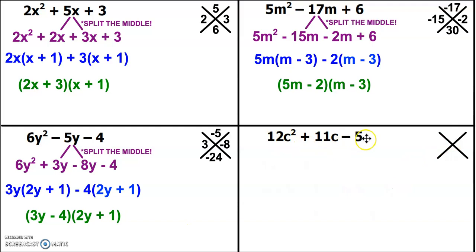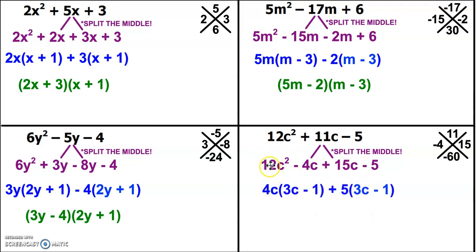In this last example, I have 12 times negative 5, which gives me a negative 60. But this time I need a positive 11. So my factors are going to be negative 4 and 15. Now I can split the middle and have 12c squared minus 4c plus 15c minus 5. Pull out the GCF. I can pull out a 4c from this first group and be left with 3c minus 1. I can pull out a 5 from the second group and be left with 3c minus 1. Since our parentheses match, we know this is just distribution that's happening here. So bring together your 4c plus 5 and your 3c minus 1 as your other factor.